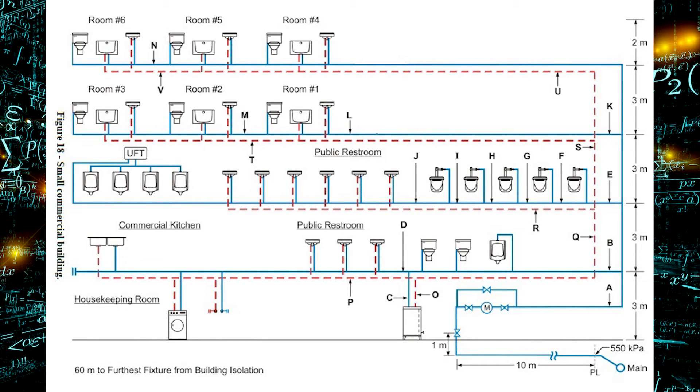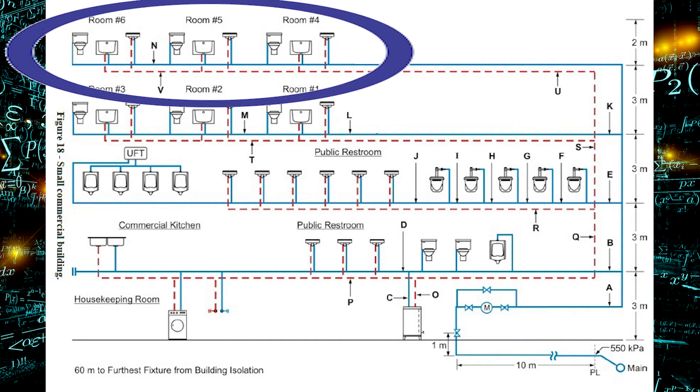So we're going to use this example right here. This is a public building. If we look on the top left hand side, the upper floor, we will see three bathrooms all in a row.